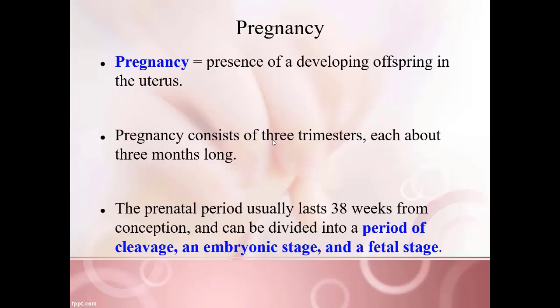Now we have a zygote being formed, which will lead to pregnancy — the presence of a developing offspring within the uterus. A pregnancy consists of three trimesters, each approximately three months long. The prenatal period typically lasts about 38 weeks from conception and is divided into the period of cleavage, the embryonic stage, and the fetal stage.